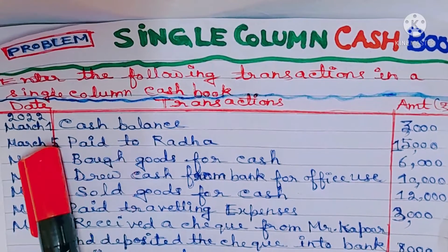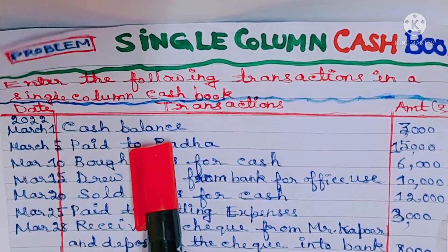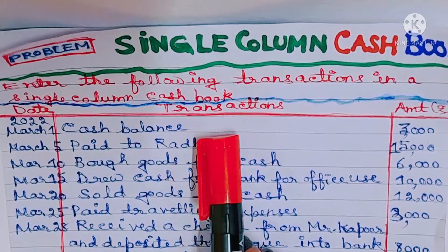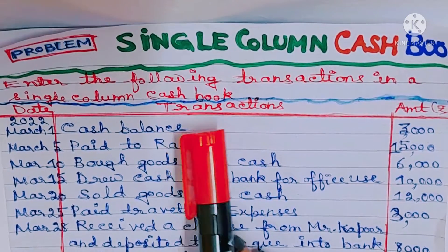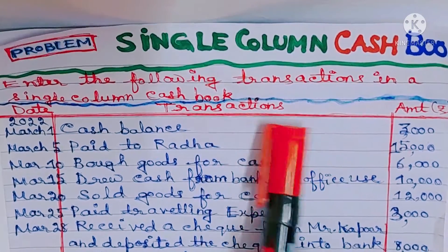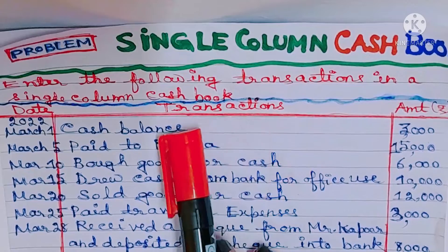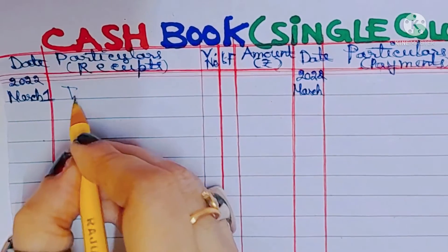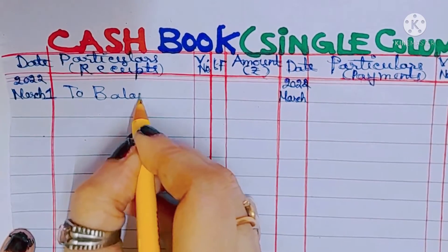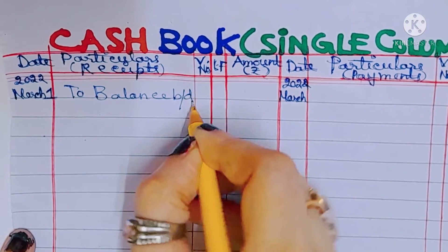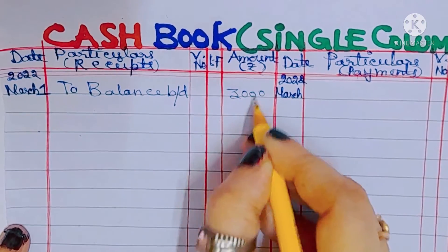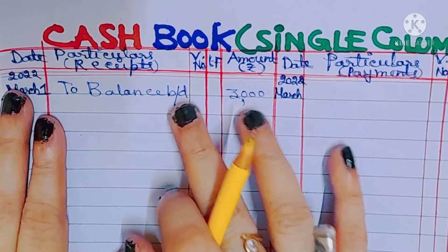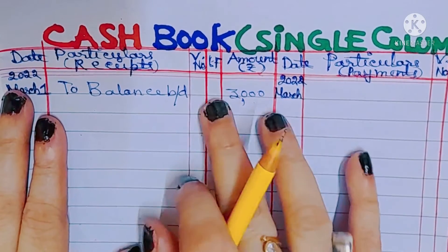What is the first transaction? On 1st March 2022, cash balance 3000. Cash balance means opening balance, so there will be no journal entry. We will write 'To Balance B/D 3000' on the debit side in the cash book, since the opening balance of cash is given in the problem. There will be no narration since it is an opening balance.